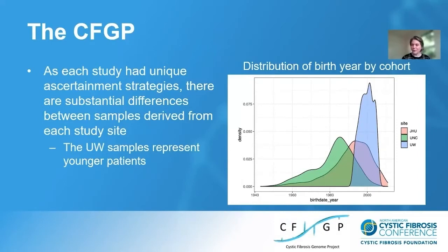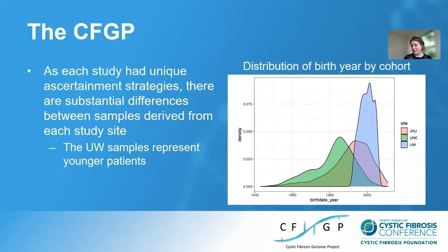This figure shows the distribution of age within the CFGP. The x-axis is the year of birth date, so younger people have larger values shown on the right. The vertical axis is the density of the data, and the three curves are color coded by site. The UW sample represents younger patients with a tight distribution on the right in blue, which looks different from the other two curves — Johns Hopkins shown in red, and UNC shown in green.